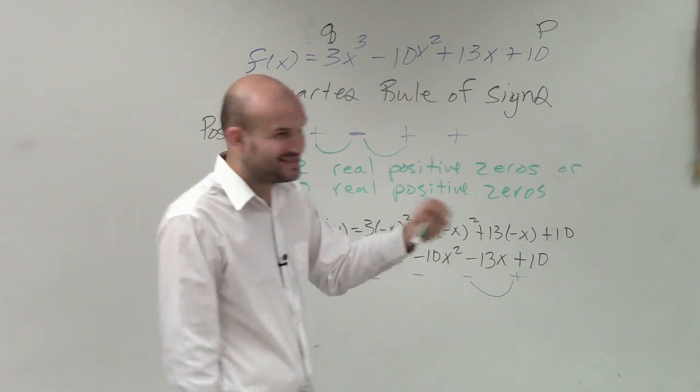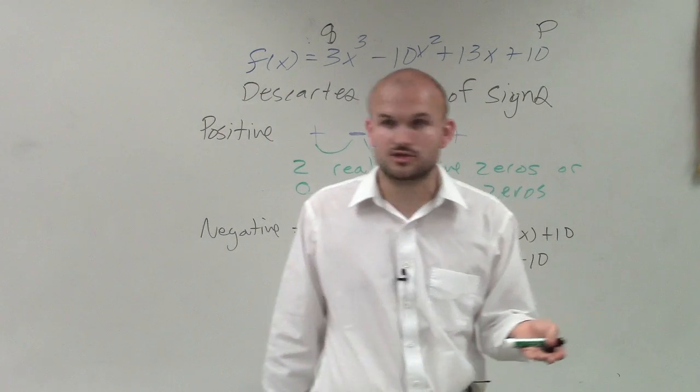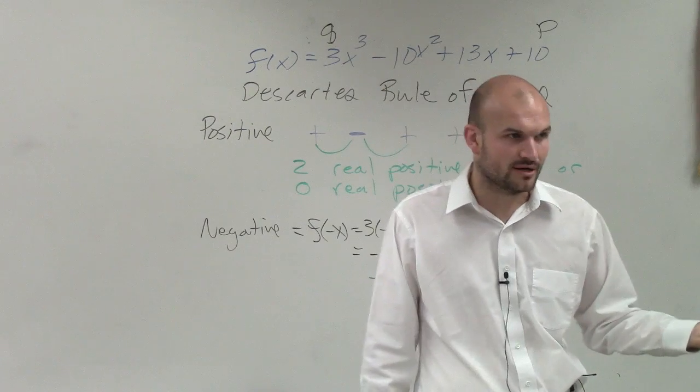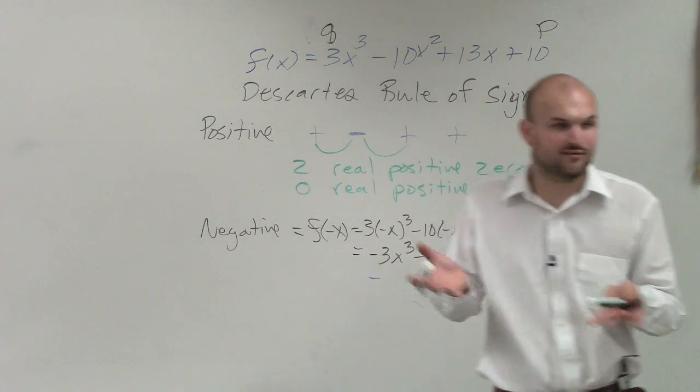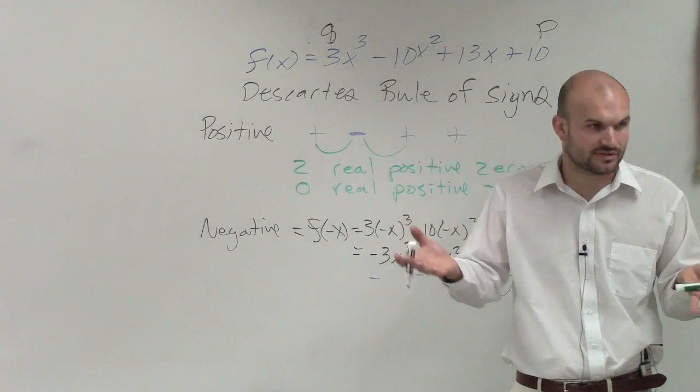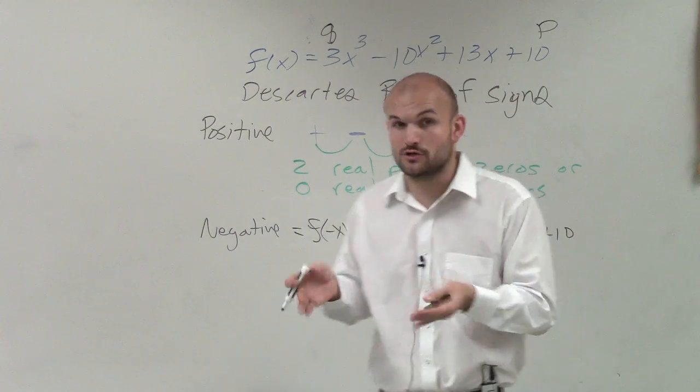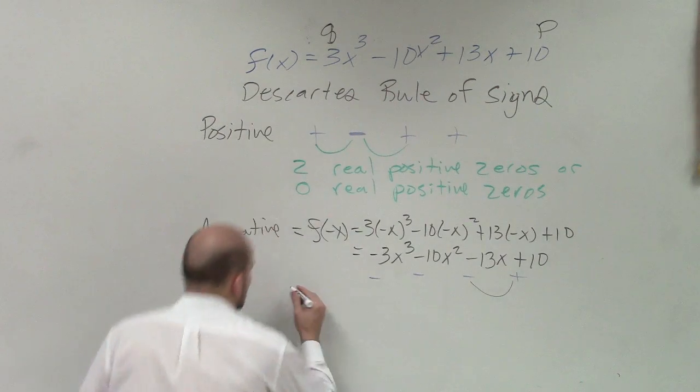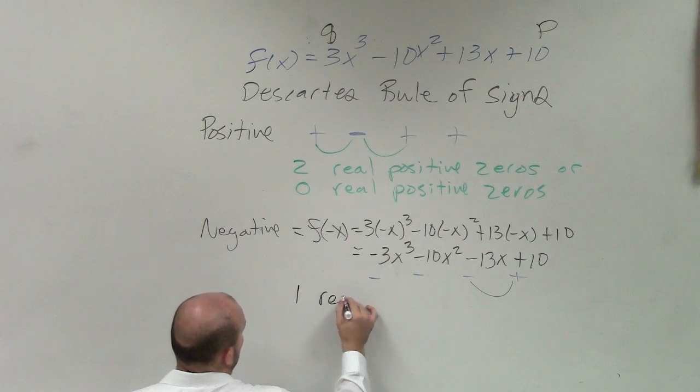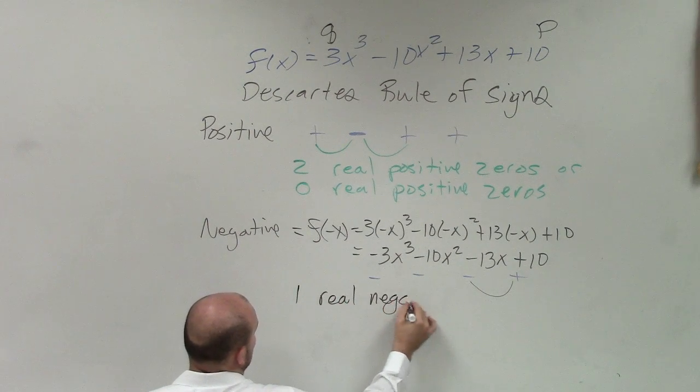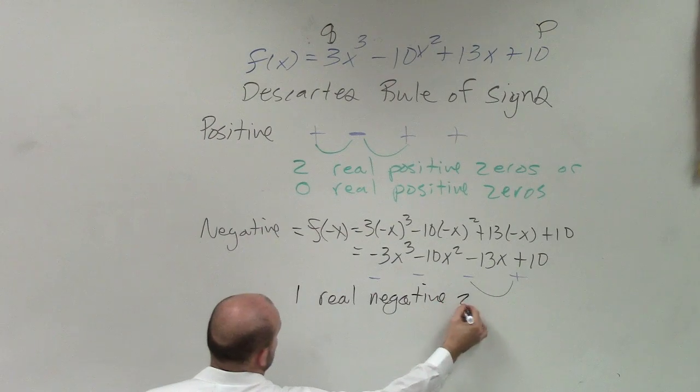But if you subtract an even number - if you subtract two from one, you're going to have negative one. You can't count negative one real zeros. You can't have negative real zeros. You can have a zero that is negative, though. Therefore we'll have one real negative zero.